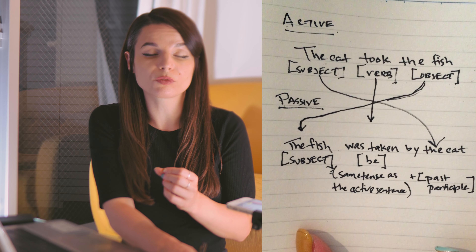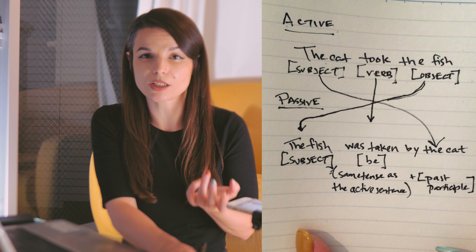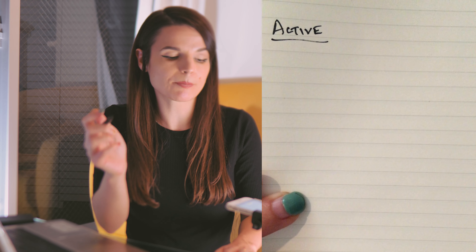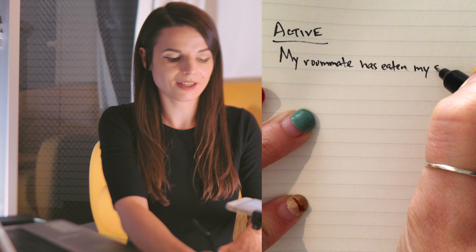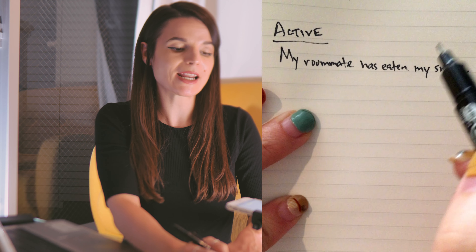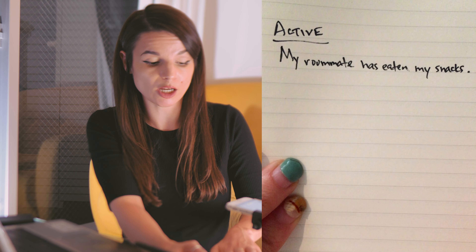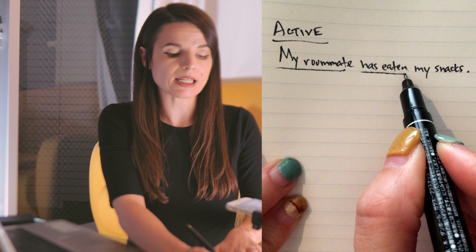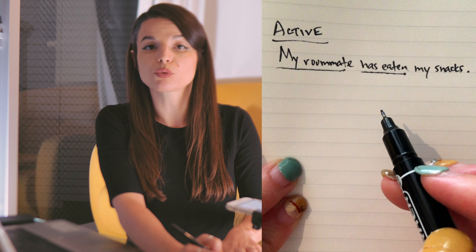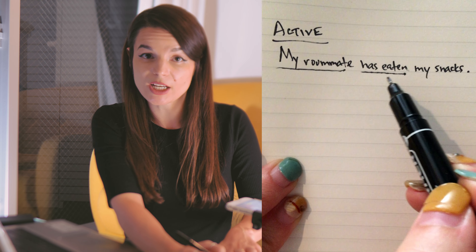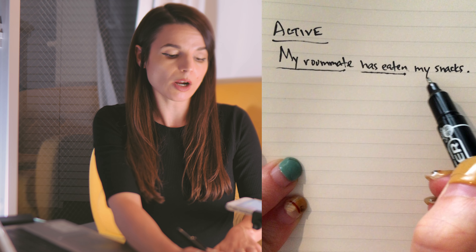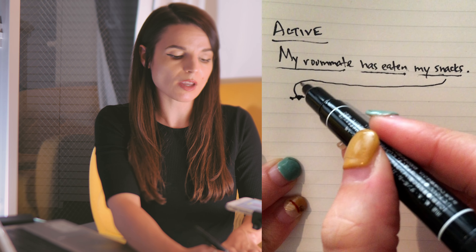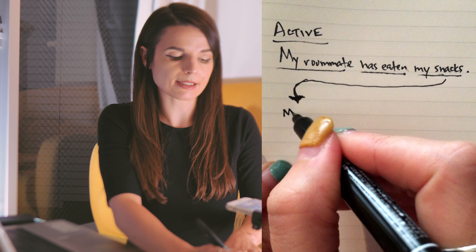Let's apply what we learned to create another passive voice sentence, but let's level it up a little bit. 'My roommate has eaten my snacks.' — hate it when that happens! We're going to follow exactly the same pattern. We have our subject: my roommate, our verb: has eaten — which is present perfect tense, something to keep in mind when we change the verb — and finally our object: my snacks. So the first step is to move the object into the subject position: 'my snacks.'